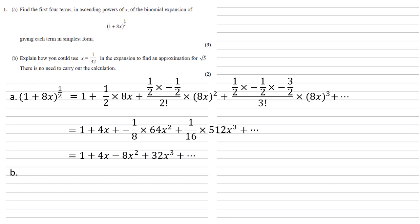For part B, we need to explain how we could use x equals 1 over 32 in the expansion to find an approximation for root 5. Note that it tells us there's no need to actually carry out the calculation. We just need to explain it.